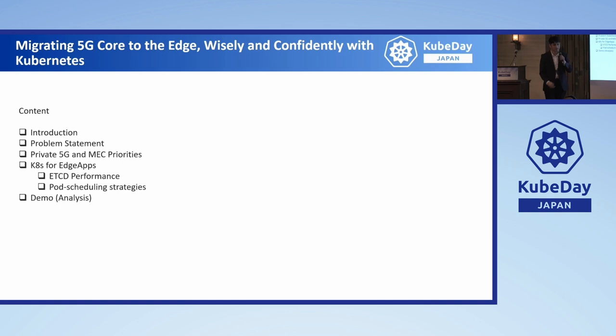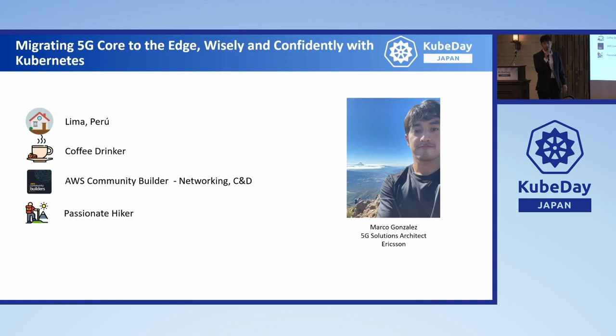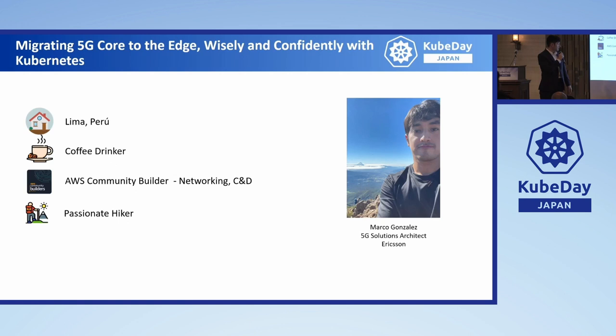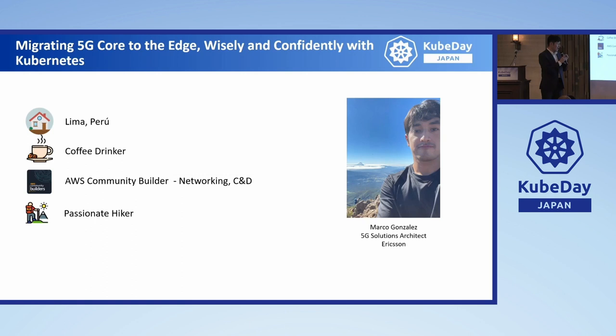A little bit about me. My name is Marco Gonzalez. I'm from Lima, Peru. I'm based in Japan since three years ago. I'm working as a 5G solution architect at Ericsson Japan, basically doing all about 5G rollouts in Japan for different telecom operators. Big coffee fan. Apart from my current role, I'm also part of the AWS Community Builder Association, talking about AWS solutions — in my case, blogs about networking, content delivery services, and how to integrate cloud services. When I have time, I try to do some hiking and take advantage of the amazing landscape in Japan.